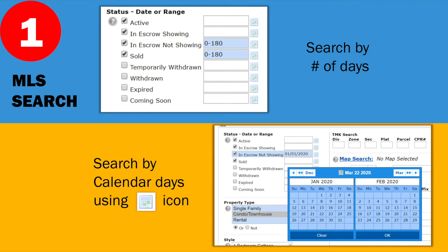Let's say for one year: 01-01-2020 to 12-31-2020. That'll give you your date range, whatever date range you want to use.